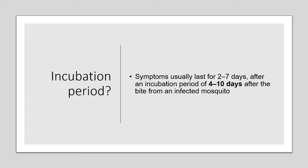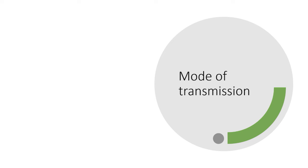What is the incubation period? The symptoms usually last for two to seven days after an incubation period of four to ten days. When this dengue virus infects a person, they may develop symptoms within four to ten days after infection, and the symptoms will last from two to seven days. So within a week, a person will get better. Most viral infections are short-lived, up to one or max two weeks.